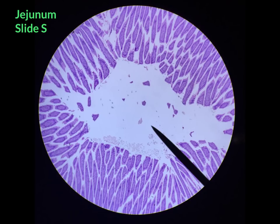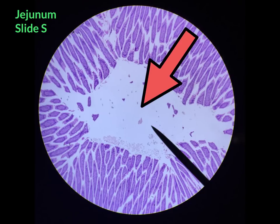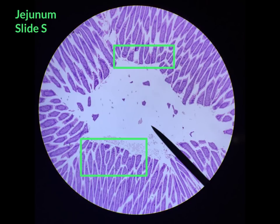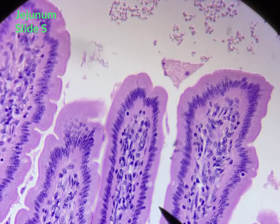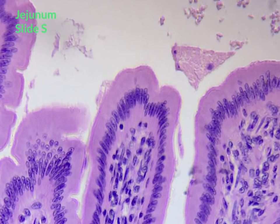Next, we are going to take a look at simple columnar epithelial tissue, which can be found in the jejunum on slide S. The big open white space in the center is the lumen — the passageway for food. The purple area is where you will focus to find simple columnar epithelial tissue. Under high power, we can see the rectangular-shaped cells of simple columnar epithelial tissue, shown here.